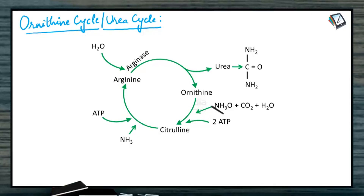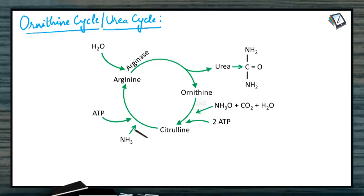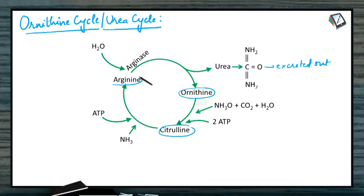Here is a pictorial representation of the ornithine cycle, also known as the urea cycle or Krebs-Henseleit cycle. Starting with Step 1, ammonia, carbon dioxide, and ATP combine to form carbamoyl phosphate. This carbamoyl phosphate combines with ornithine to form citrulline (Step 2). In Step 3, citrulline is converted to arginosuccinate, which then cleaves to form arginine and fumarate. Arginine, in the presence of arginase and water, forms urea and ornithine, which re-enters mitochondria to run another cycle. The major components of the ornithine cycle are ornithine, citrulline, and arginine.